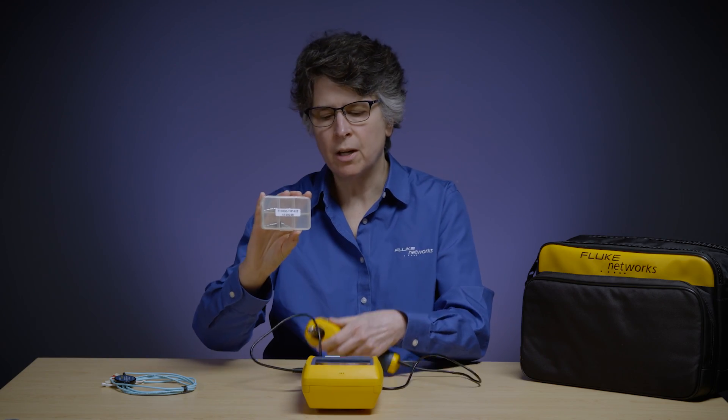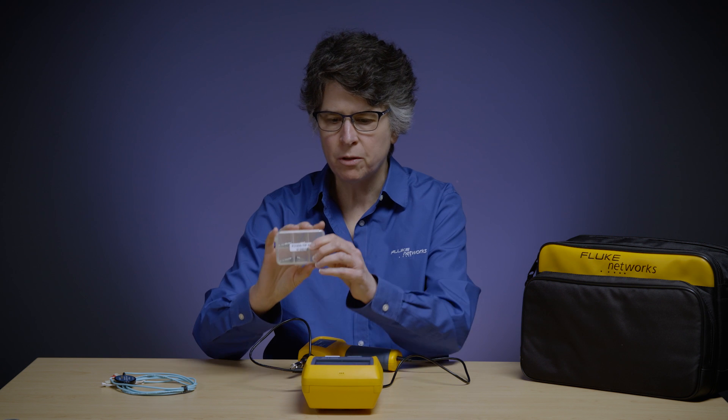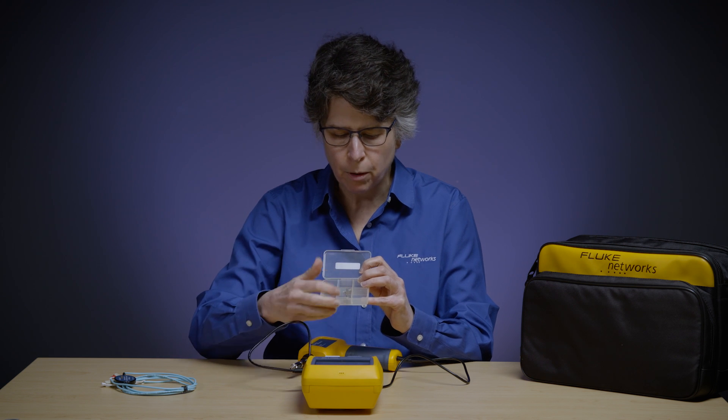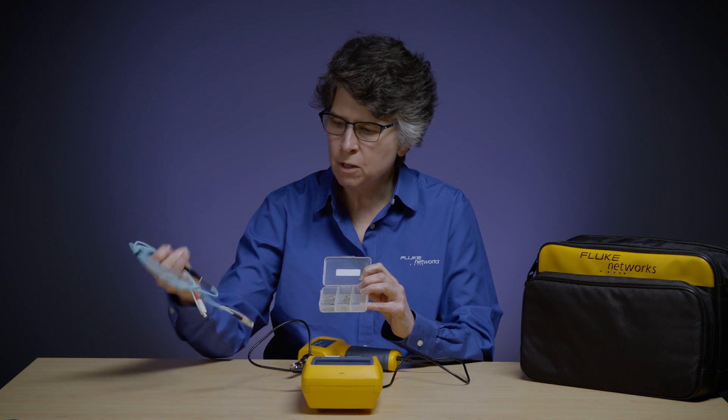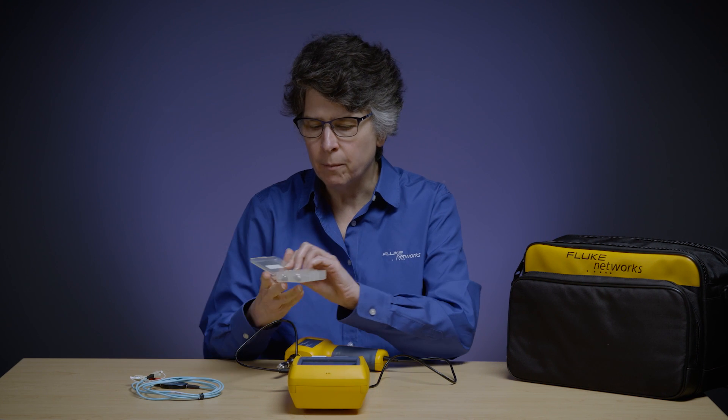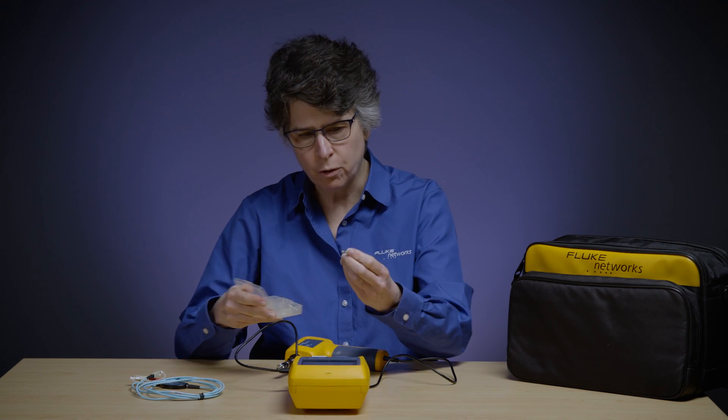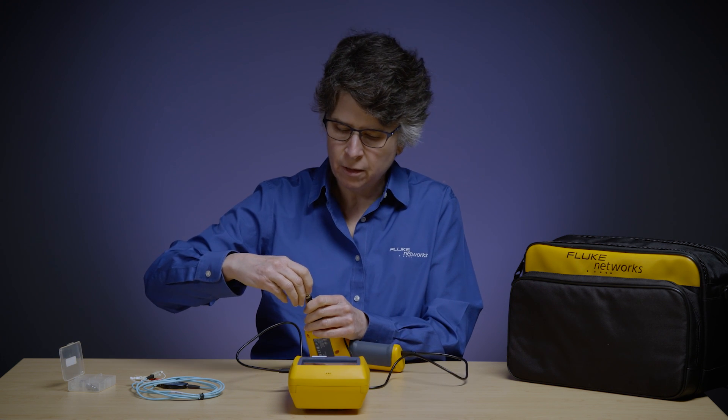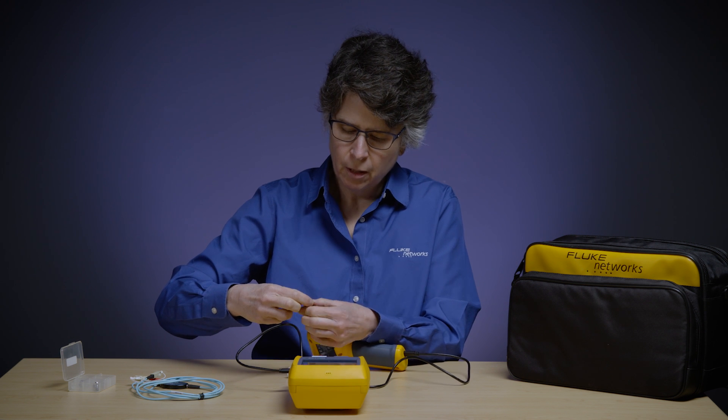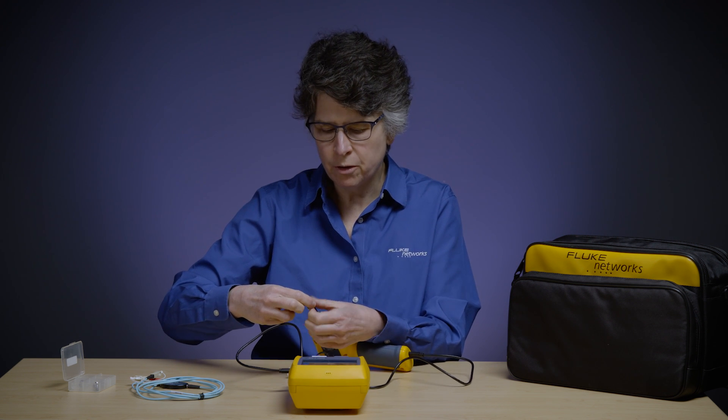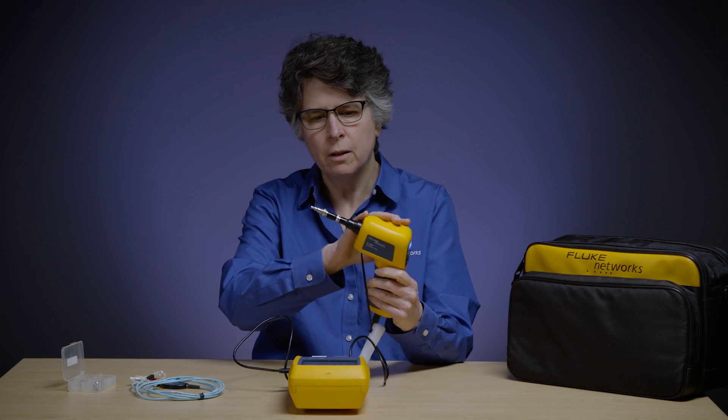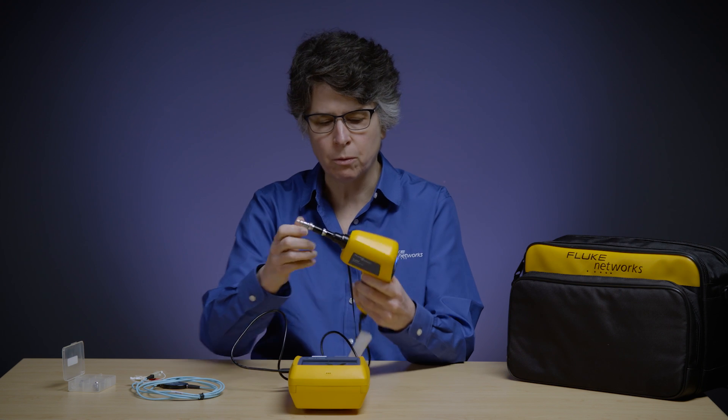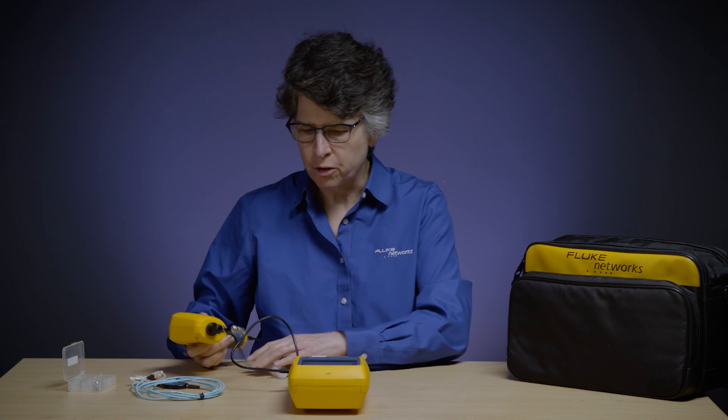Now we have this optional set of Fi1000 tips which gives you both a 1.25 and a 2.5 patch cord and bulkhead tip. Since we're going to be inspecting a multimode patch cord, I'm going to take out the 2.5 patch cord tip and it just goes right here on the single fiber adapter and it's keyed also. And so now we are set up for single fiber inspection. The camera, single fiber adapter, and right now I'm using a 2.5 patch cord tip.